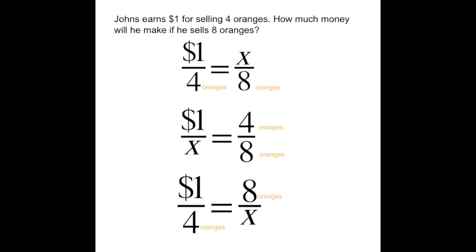For the first problem, it says John earns one dollar for selling four oranges. How much money will he make if he sells eight oranges? This is a simpler one.